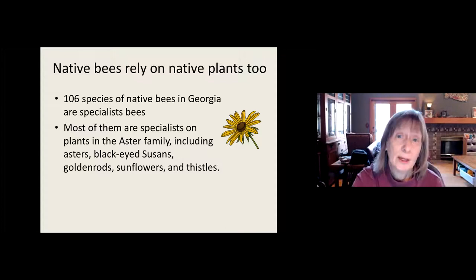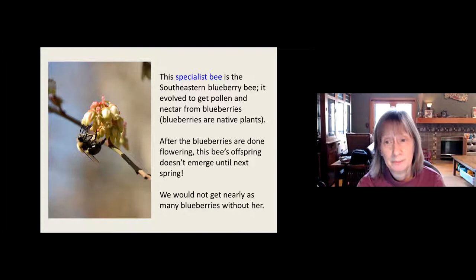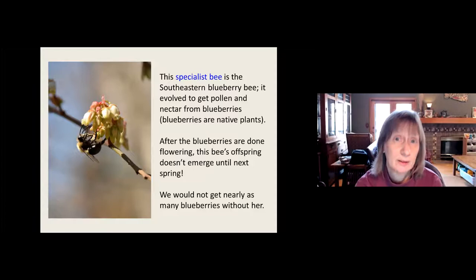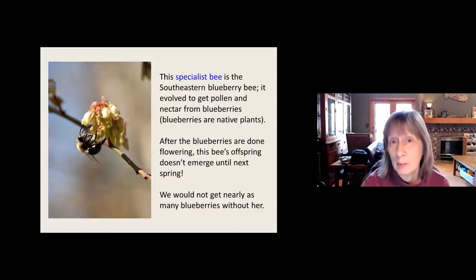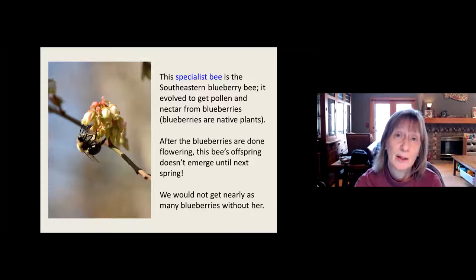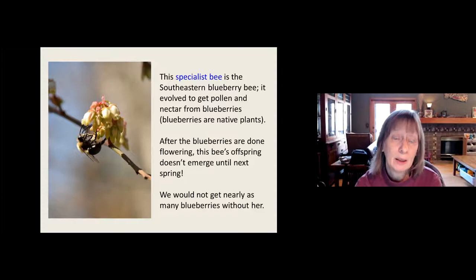Here's an example of a specialist bee: the southeastern blueberry bee, which evolved to get pollen and nectar exclusively from blueberries. Blueberries are native plants — even the ones in the grocery store came from native plants. They flower from late February into early May. Once they're done flowering, this bee is done too — she's made the next generation, and they're all safely in their nest waiting to emerge in the spring. You won't see this bee after that until it's time again.